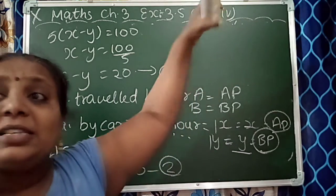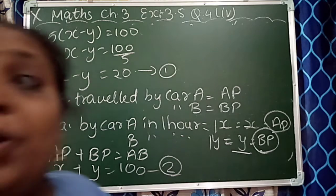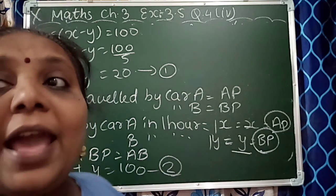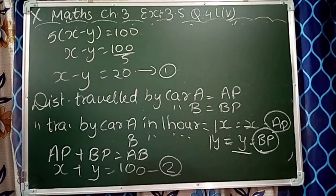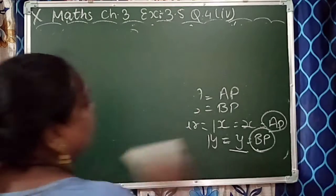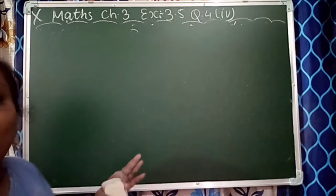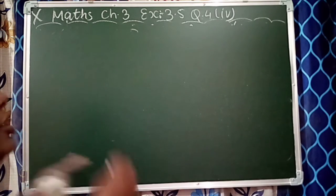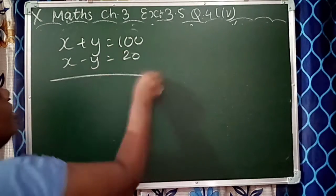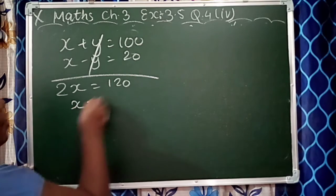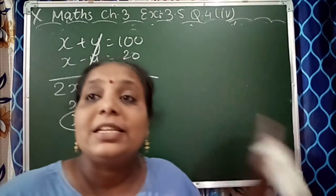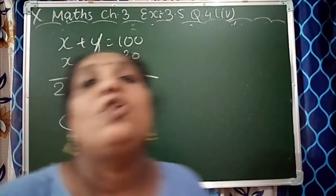First equation was x minus y equals 20. Now adding both equations: x plus y equals 100 and x minus y equals 20. The y cancels, so 2x equals 120, therefore x equals 120 upon 2, so x equals 60 km/h. Now we substitute x equals 60 into equation 2.